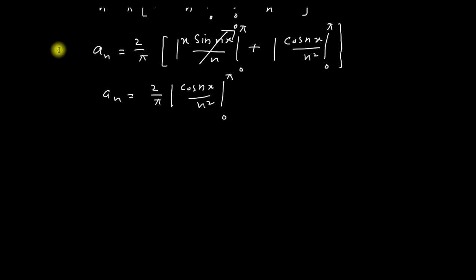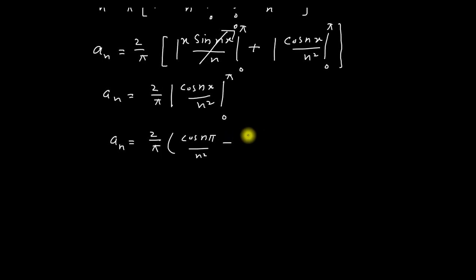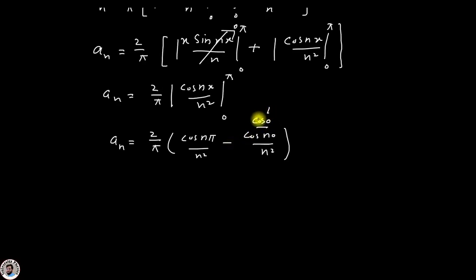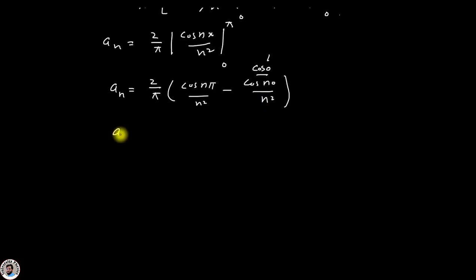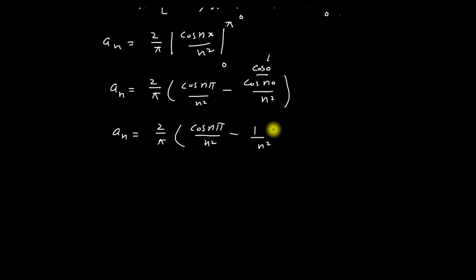Putting the upper and lower limits: aₙ = (2/π) × [cos(nπ)/n² − cos(0)/n²]. Now cos(0) = 1, so we can write: aₙ = (2/π) × [cos(nπ)/n² − 1/n²]. We know that cos(nπ) = (−1)ⁿ.